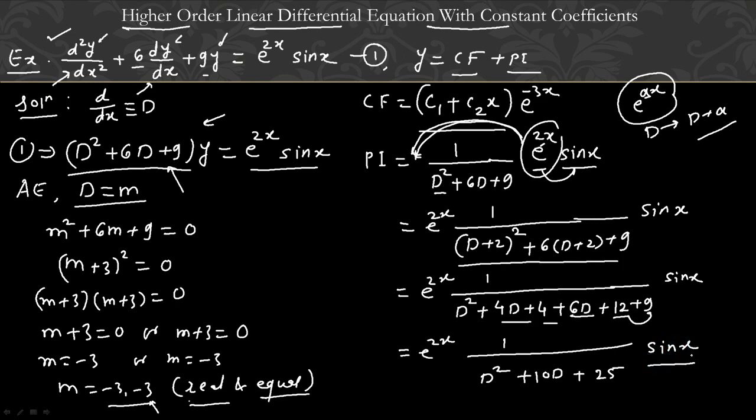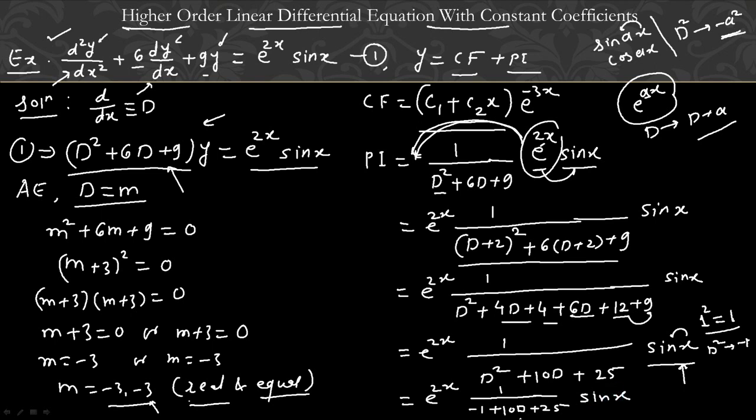When we have sine or cosine terms, there is a rule for calculating PI. If we have sine ax or cos ax, we replace D squared with minus a squared. A is the coefficient of x. Here the coefficient of x is one. So PI equals e to the power 2x times 1 upon (10D plus 24) into sin x. Since one squared is one, D squared becomes minus 1, so minus 1 plus 25 gives 24.